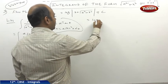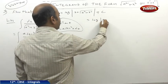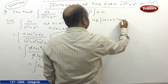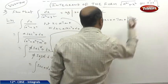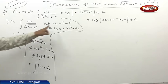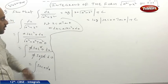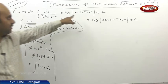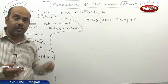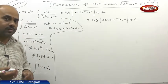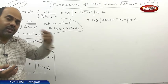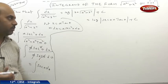The integral of sec θ dθ equals log mod (sec θ plus tan θ) plus c. But x equals a tan θ was given to us, and the answer needs to be in terms of algebraic expressions, but we got it in terms of trigonometric expressions. So we need to convert these trigonometric values into algebraic values.